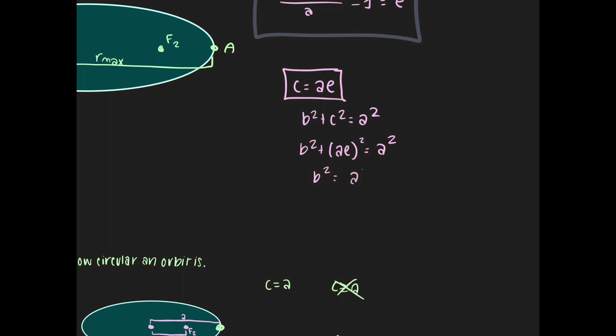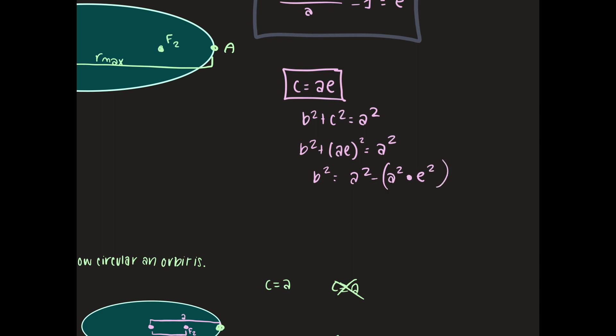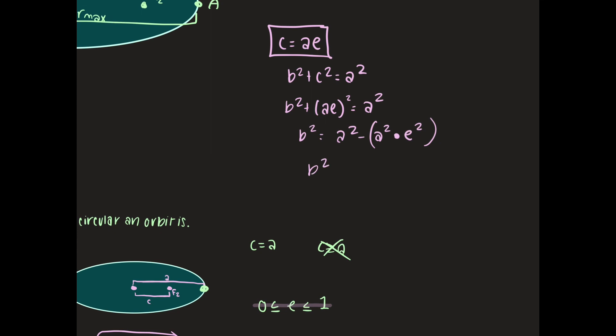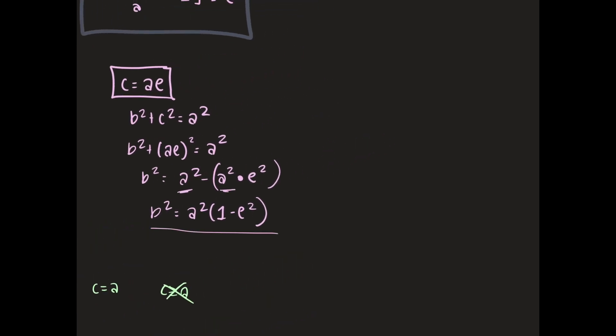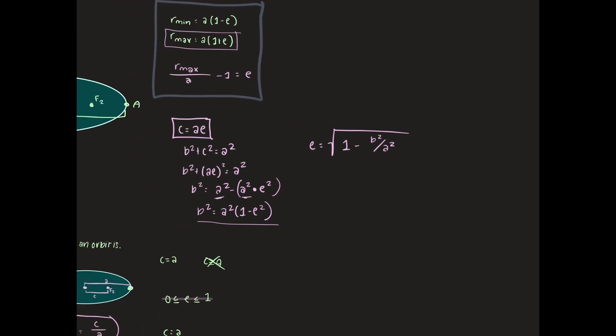And then that would simplify to b squared equals a squared times one minus e squared, which is where we just took a squared out. If we solve this for e, we have e equals the square root of one minus b squared over a squared. And you'll see that this equation right here is generally what people use when they're dealing with eccentricity and they're attempting to find it.